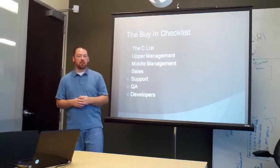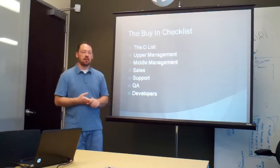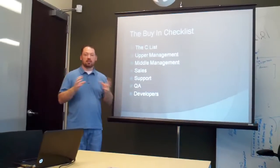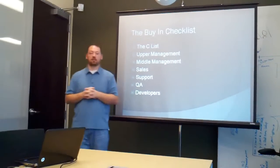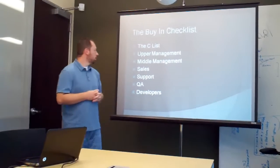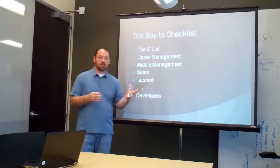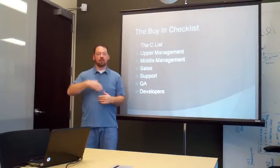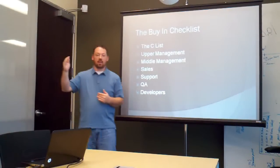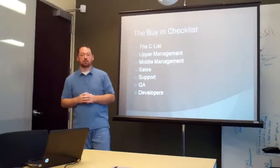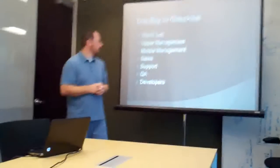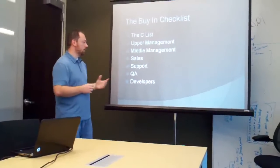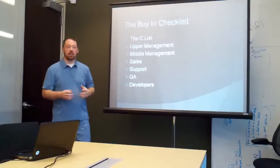You have the C-list — your CEOs, CTOs, that sort of thing — and upper management. In some companies, upper management and the C-list will be one and the same. You also have middle management. When I implemented Agile, I was in middle management — I had developers underneath me and the CEO above me. I saw the problems of the waterfall approach and decided I was going to pitch Agile, try to get those buy-ins, and actually implement it.